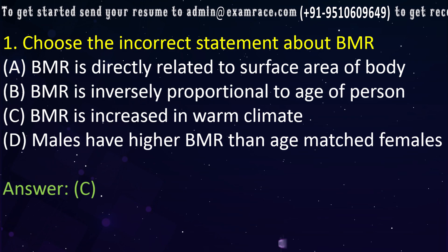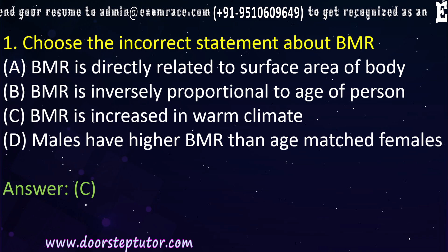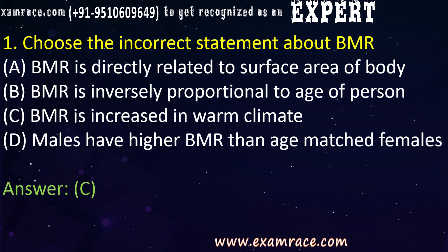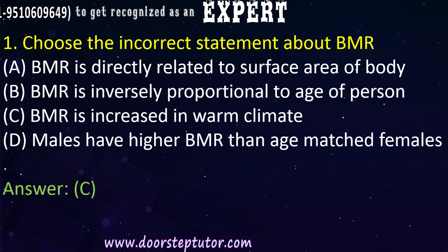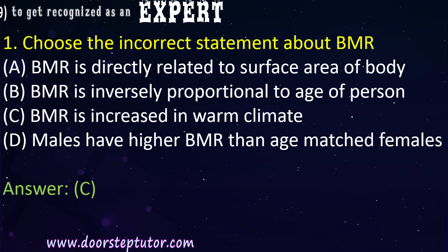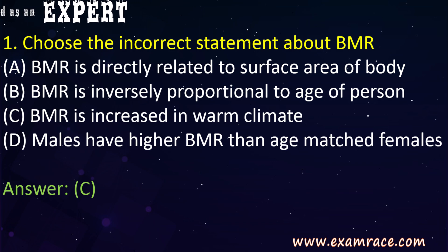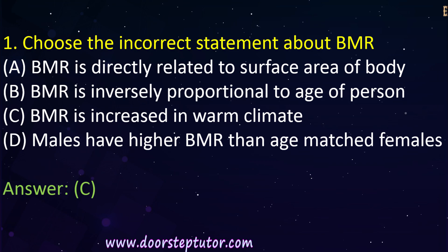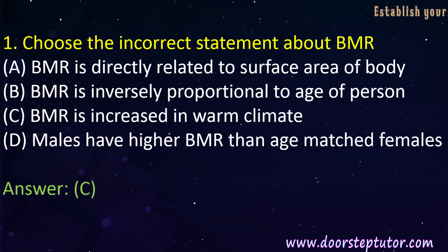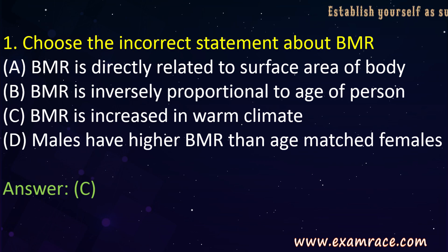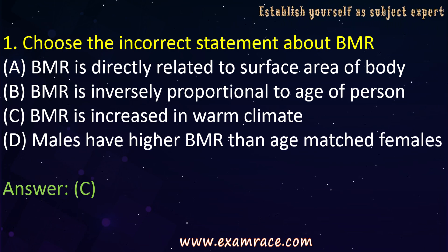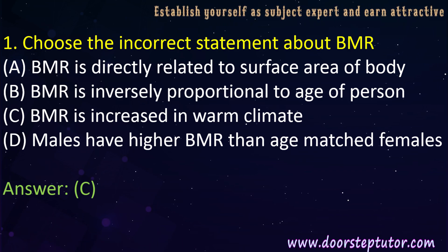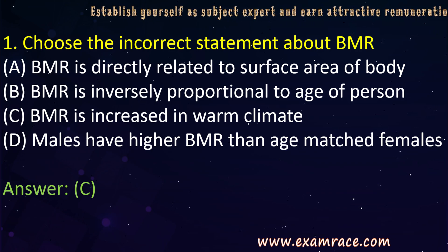BMR is directly related to the surface area of a body. BMR is inversely proportional to the age of a person — that is, BMR tends to be higher in infants and young children compared to adults. BMR tends to be higher in males than females, and higher in people living in tropical climates than temperate zones. The correct answer is C: BMR is not increased in warm climates.